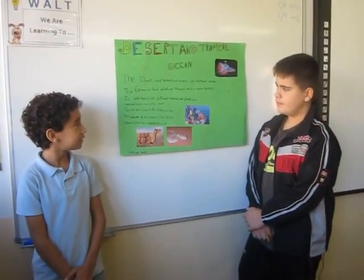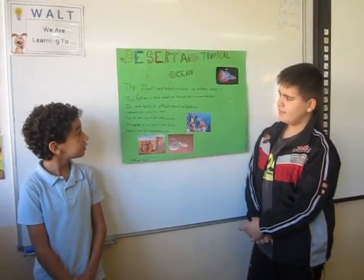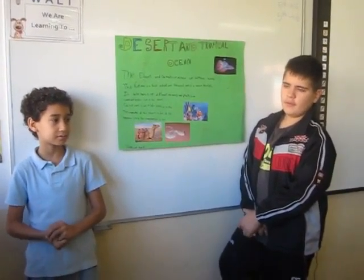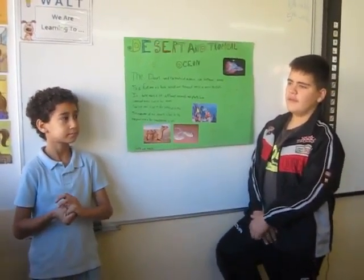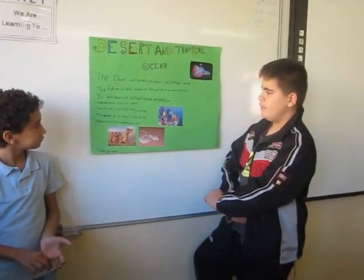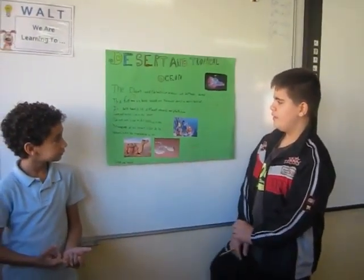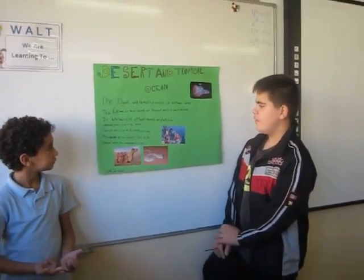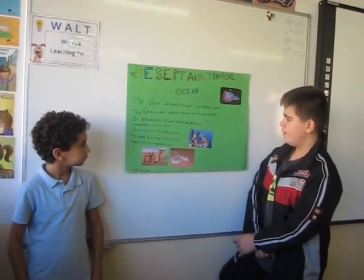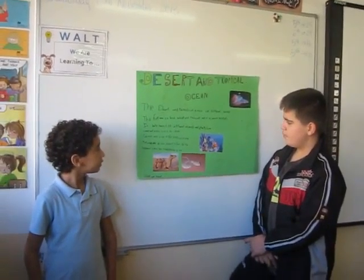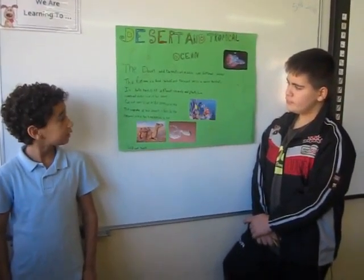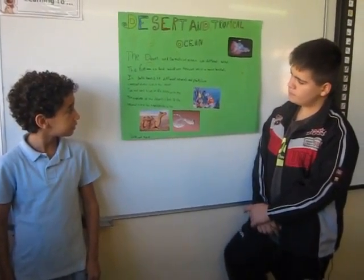The ocean and tropical oceans have different habitats. The first one on land, water, and the second one, which matches the habitat. These habitats have different animals and plants.